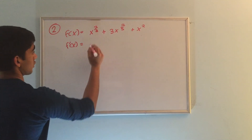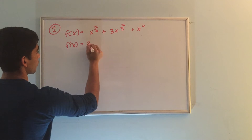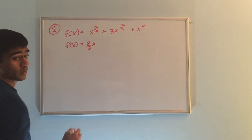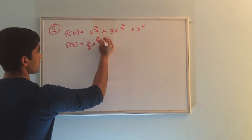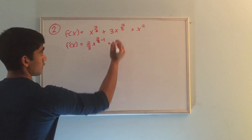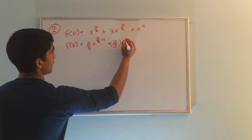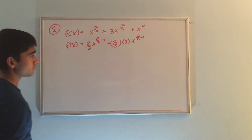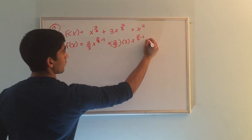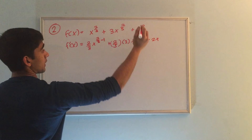The derivative of the first term — remember, bring down the constant — is 2 thirds x, and subtract 1 from the exponent, so 2 thirds minus 1. Plus the second term: bring down 2 fifths, times 3, x to the 2 fifths minus 1. And the last term: bring down the 2, x to the 2 minus 1.